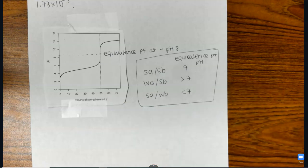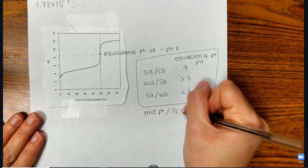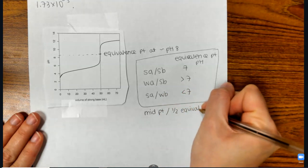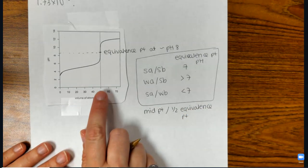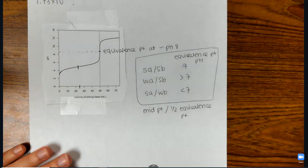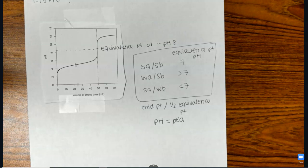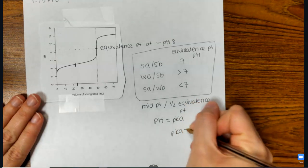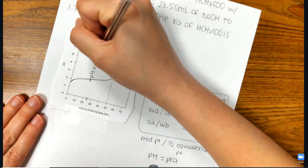So that's the first thing that is really important about these graphs. The next thing that is really important, it's called the midpoint. The midpoint or the half equivalence point, you can call it whatever you want. You'll see it both ways. Because at the midpoint, which is halfway to the equivalence point, so on this graph, halfway to 50 would be 25. So right here, at that midpoint, your pH equals the pKa of your weak acid, which if you don't know, pKa is just the negative log of the acid's Ka.